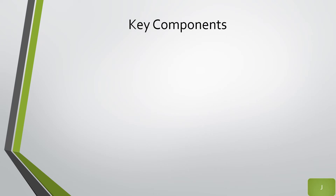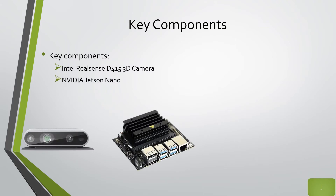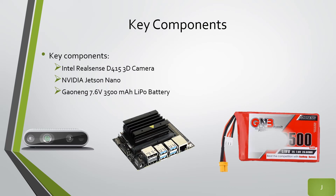Several key components were changed throughout the design iterations. A 3D camera was selected instead of a 2D camera to capture depth. A Jetson Nano was used as the processing unit instead of a Raspberry Pi because it includes a graphics processing unit. A lipo battery providing 3500 milliamp-hours and 7.6 volts output was also selected.